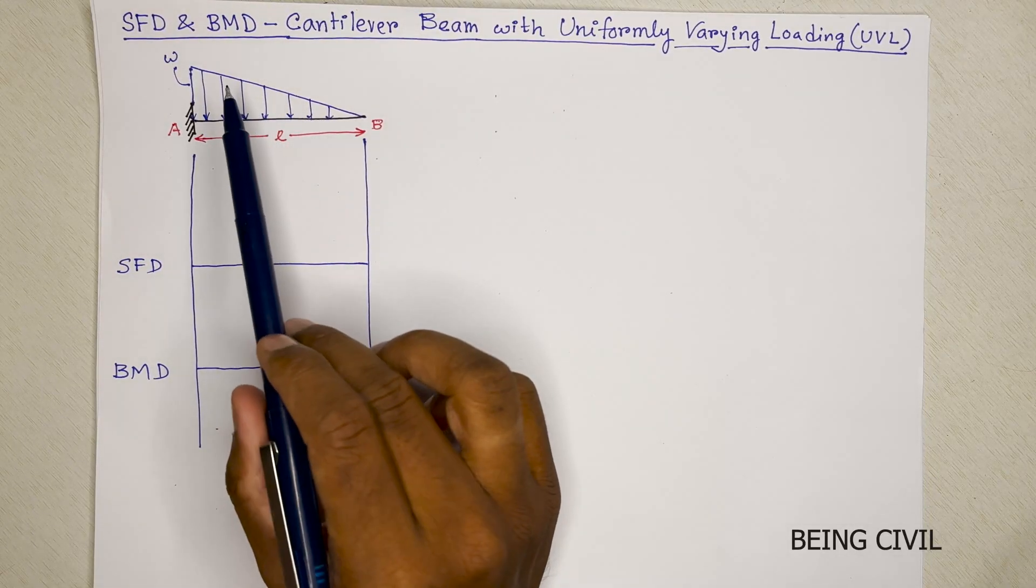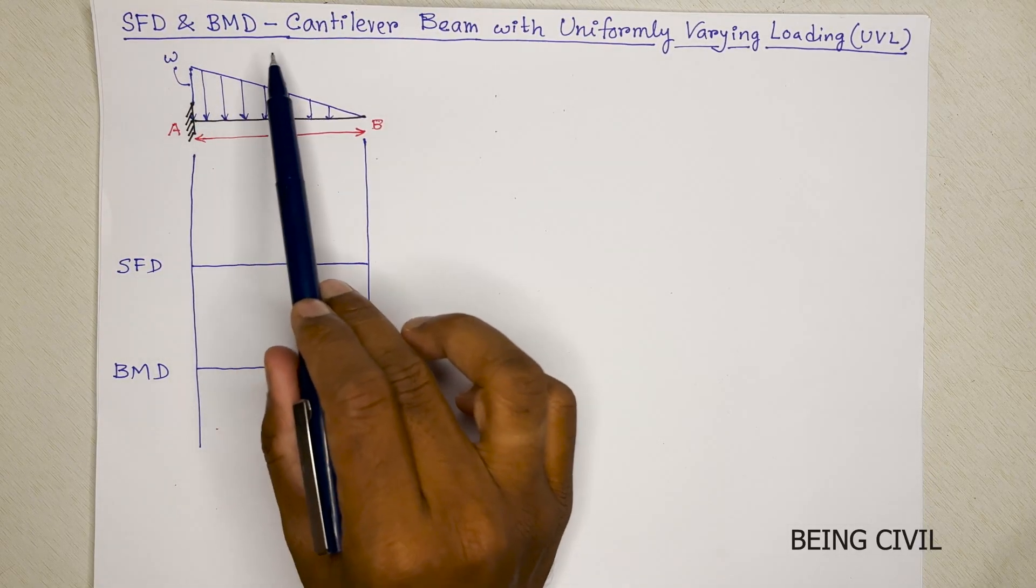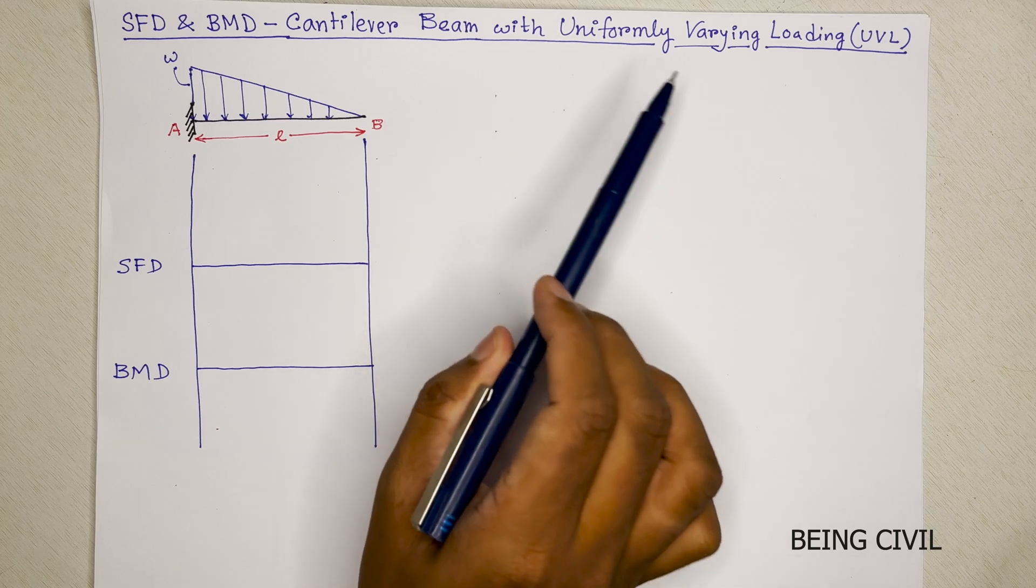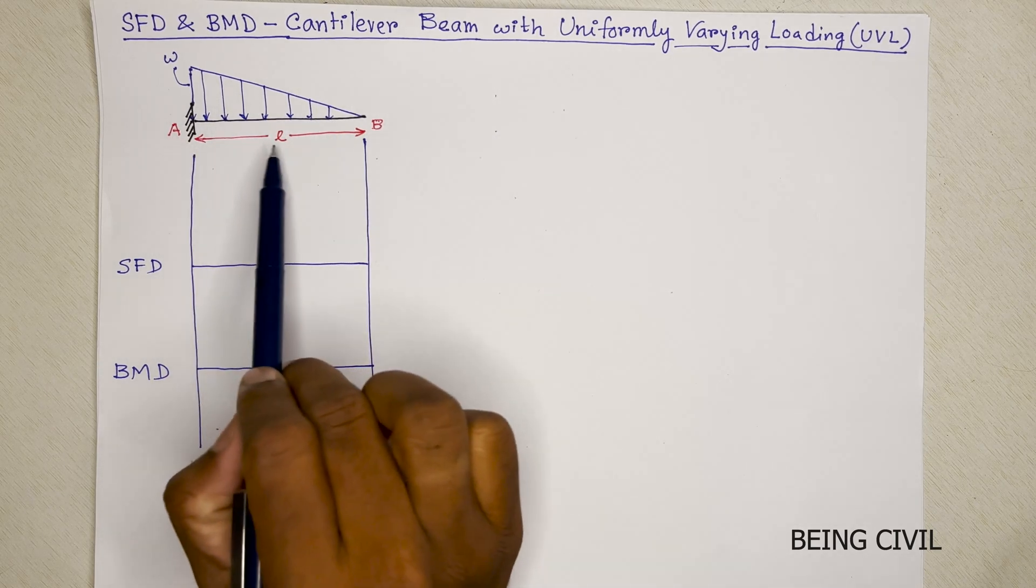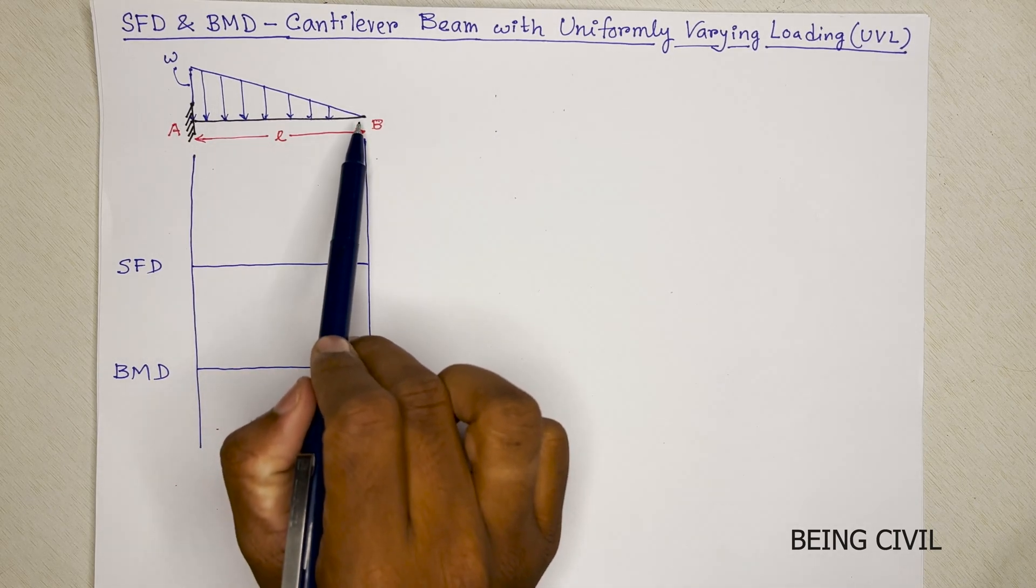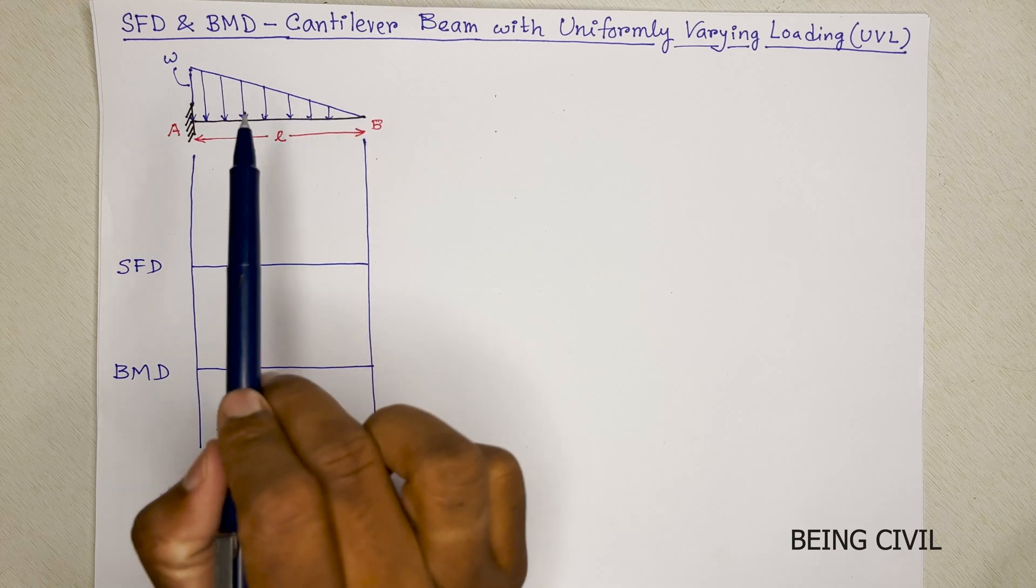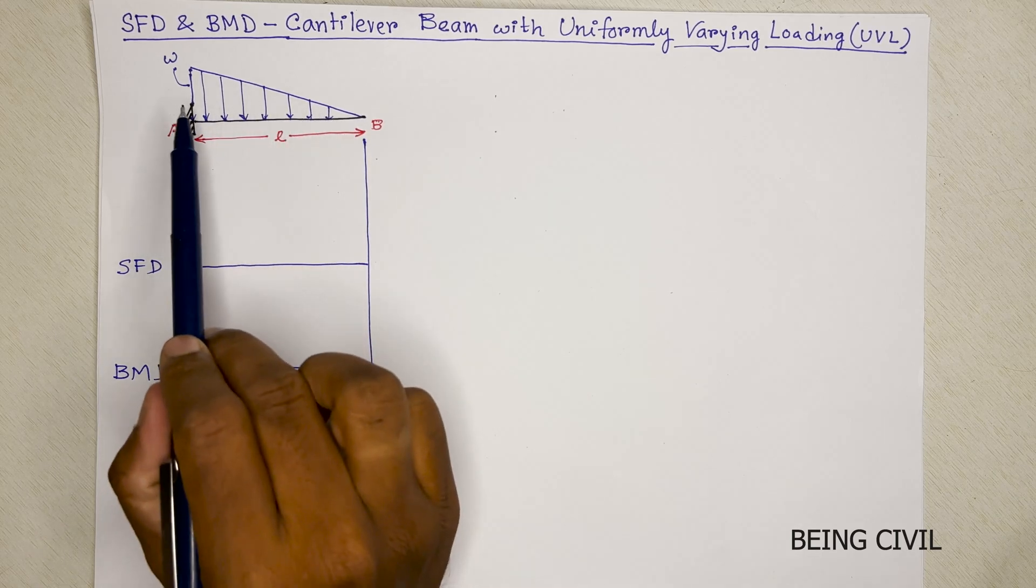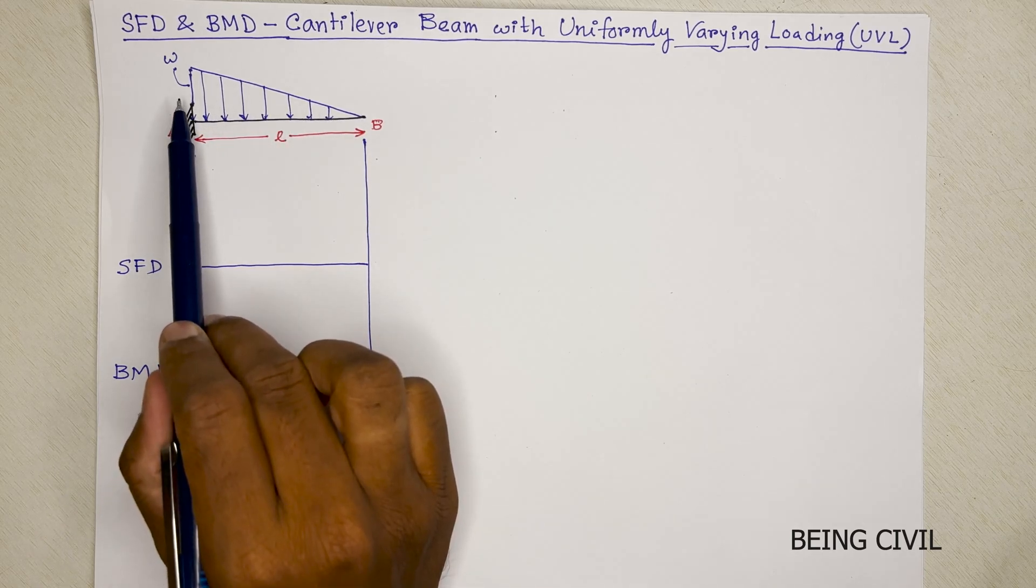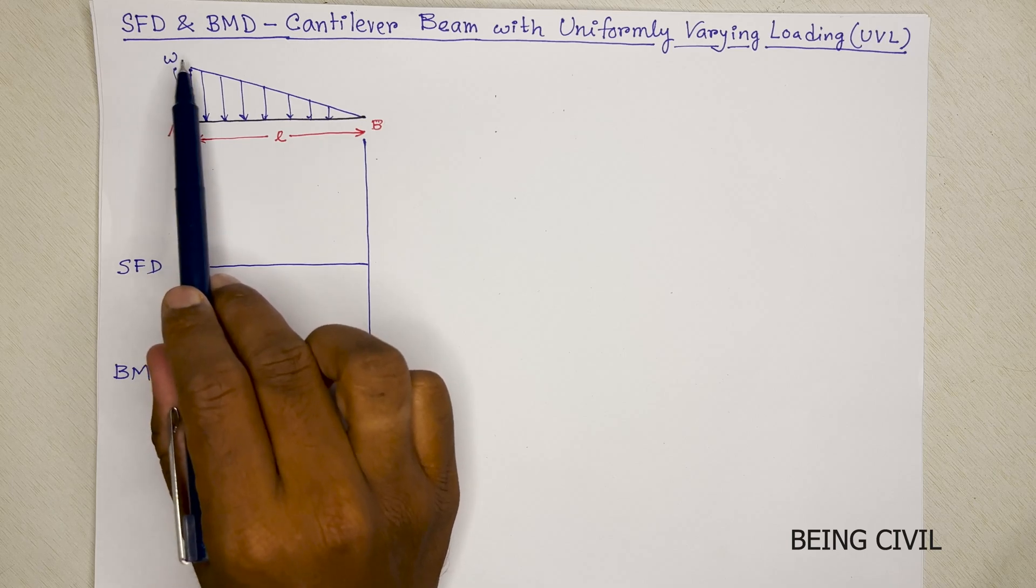Hello everybody, welcome to Being Civil. In this video, we will draw the shear force and bending moment diagram of a cantilever beam with uniformly varying loading. The beam is of length L and the loading starts at 0 at the free end and uniformly varies to the fixed end and the value of the loading at the fixed end is W per unit length.